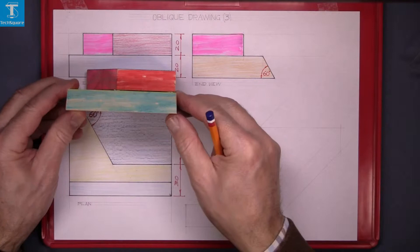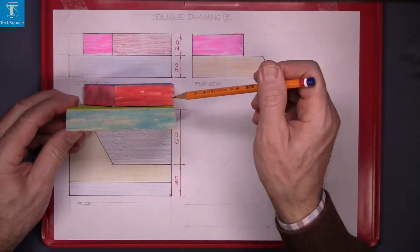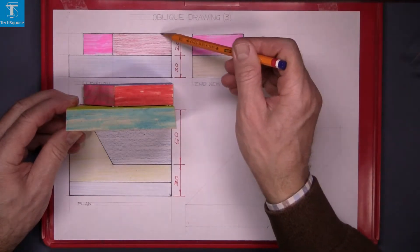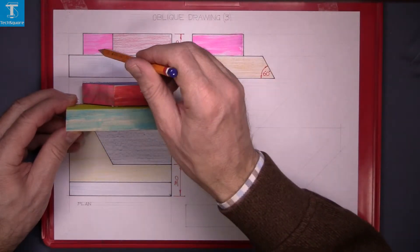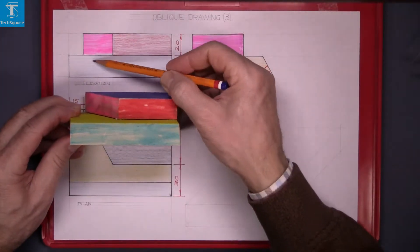Looking at the elevation of it, this is what we see. The red surface, the pink surface there and the blue surface is the front here.